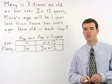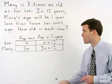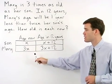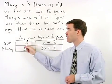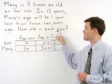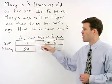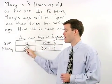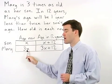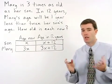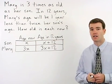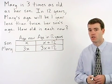Our goal in this problem is to find the value of x, because x represents the son's age now. And look at what the problem is asking: how old is each of them now? If we can find the son's age now, x, we can easily find Mary's age now, which is 3x. And we have our answer to the problem. But in order to find x, we need to set up an equation, and to do that, we use the second sentence in the problem.